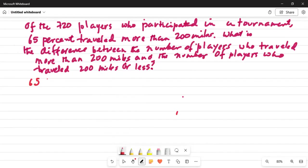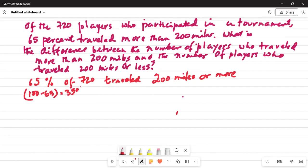So, 65% of 720 traveled 200 miles or more to participate in the tournament. And the remaining, which is 100 minus 65, which is not given in the problem, but you can safely assume that 35% of 720 traveled 200 miles or less.